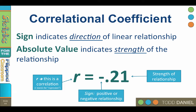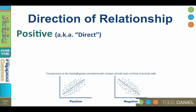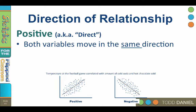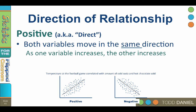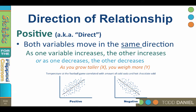Correlations close to zero are weak. The direction of relationship is indicated by the positive or negative sign. In a positive relationship, also known as a direct relationship, both of the variables move in the same direction — as one variable increases, the other increases, or as one decreases, the other decreases. For example, height and weight are correlated, especially for children. As you grow taller, you will likely weigh more. If we are running the concession stand at the football game, as temperature increases, the sales of cold soda will also increase. As the temperature decreases, we will sell less cold soda.